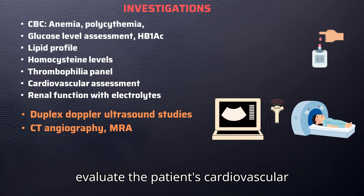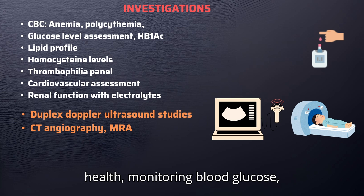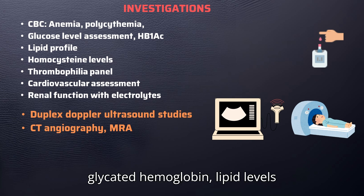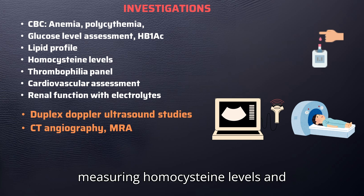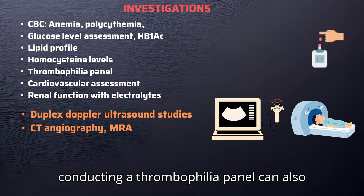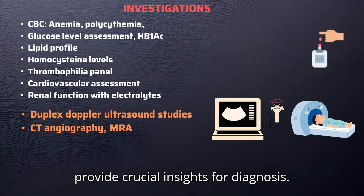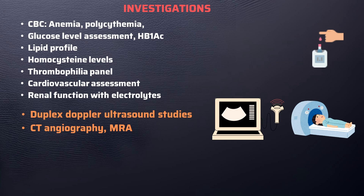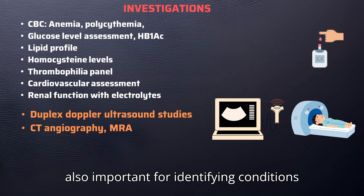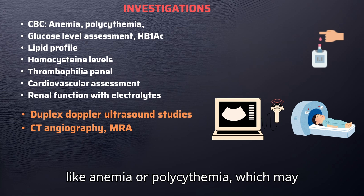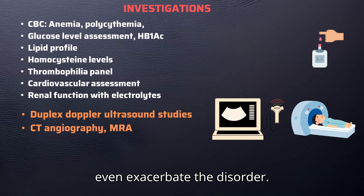To thoroughly evaluate the patient's cardiovascular health, monitoring blood glucose, glycated hemoglobin, lipid levels, and renal function including electrolytes is essential. Additionally, measuring homocysteine levels and conducting a thrombophilia panel can provide crucial insights for diagnosis. The complete blood count is also important for identifying conditions like anemia or polycythemia, which may exacerbate the disorder.